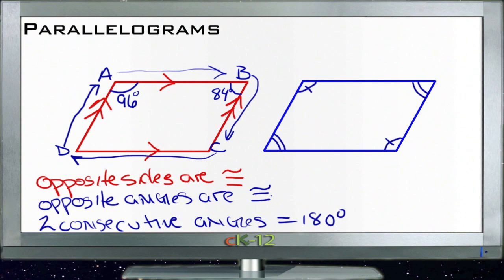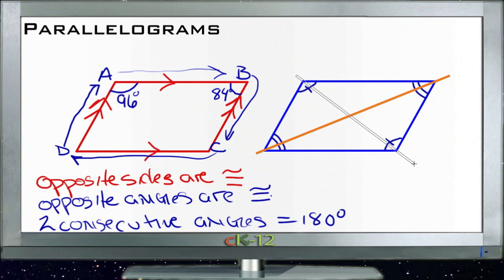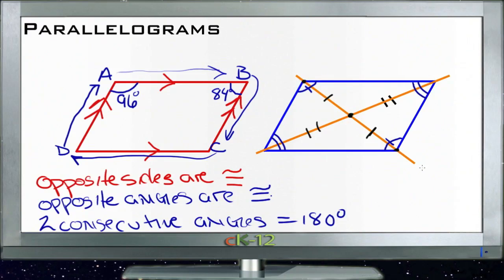Finally, if you were to take the diagonals of a parallelogram — drawn from vertex to vertex — those diagonals will bisect each other. That means this length here is going to be equal to the length on the other side of the intersection, and the same for the other diagonal. That works for any parallelogram, which is pretty nice because it lets us figure out all kinds of things without needing a whole lot of information to start with. Let's see how that applies to our example questions.